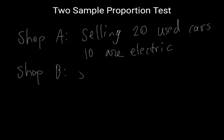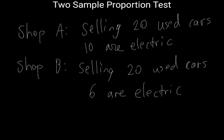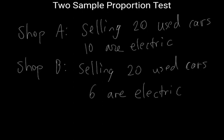And shop B is also selling 20 used cars, and of those 20 cars, 6 are electric. Suppose we wanted to ask the question, is one of them selling more electric cars than the other from a statistical point of view? Is one shop more prone to selling electric vehicles than the other shop?